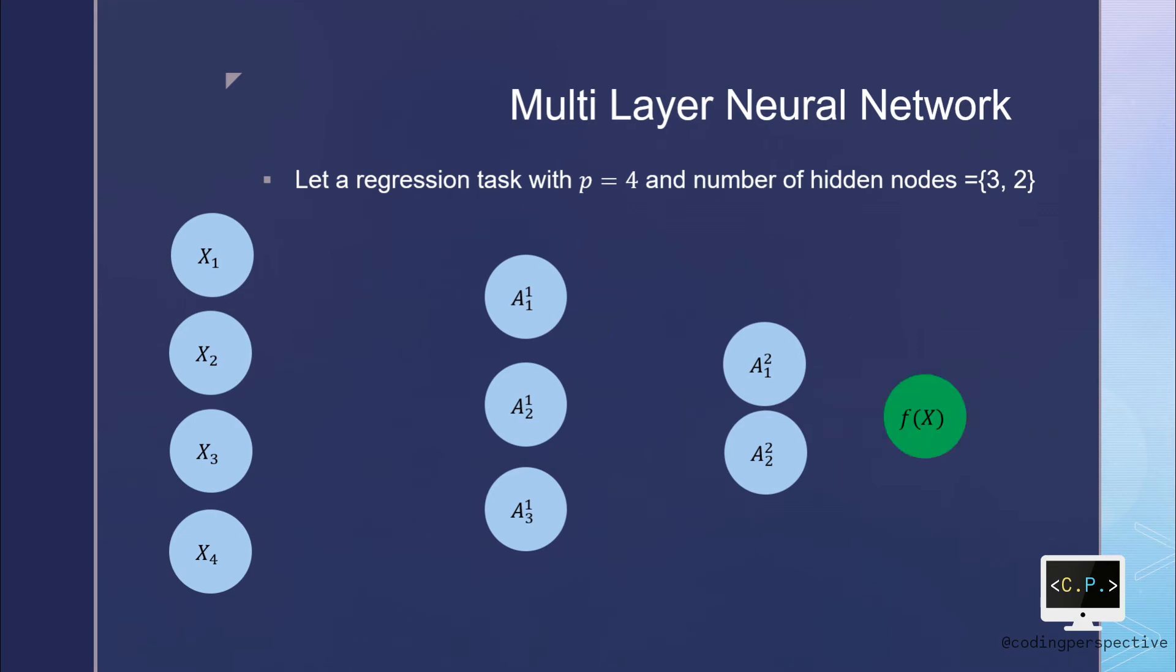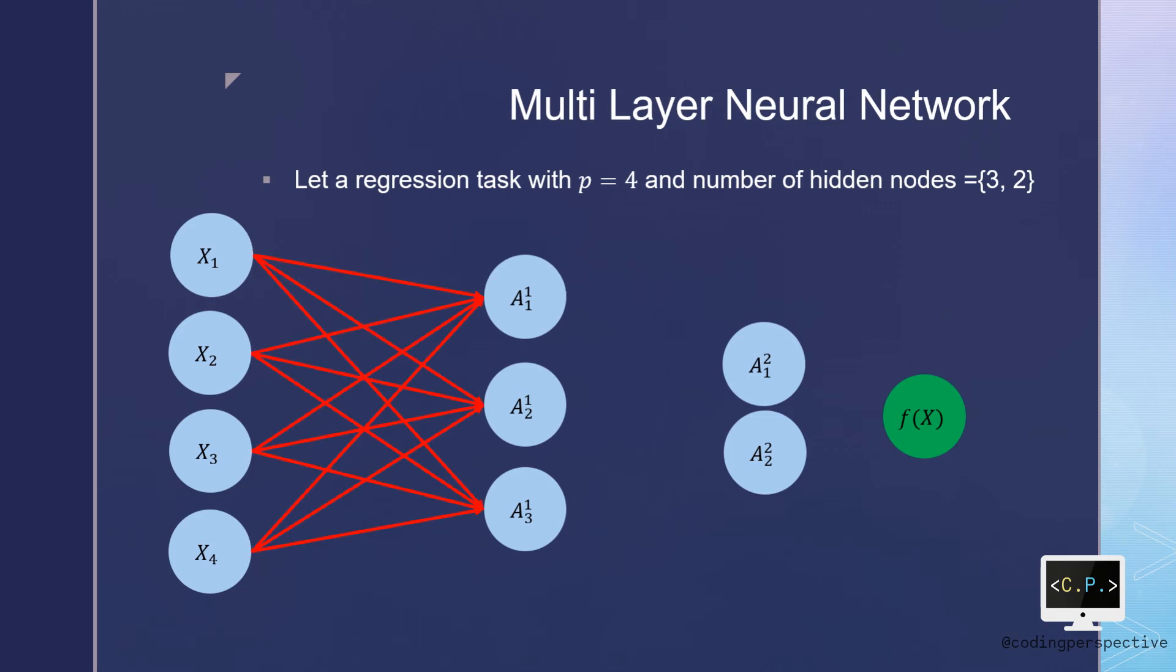Finally, we have an output layer where we finally estimate our fx, where x is the whole training data. As usual, we are working on a fully connected graph, meaning that each node in adjacent layers are connected to each other.